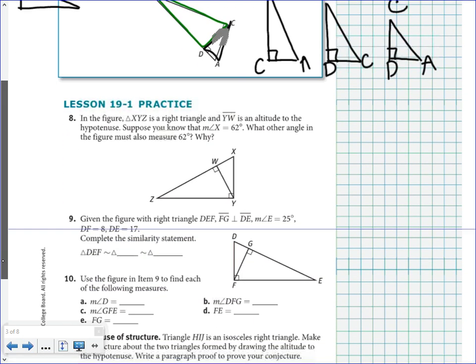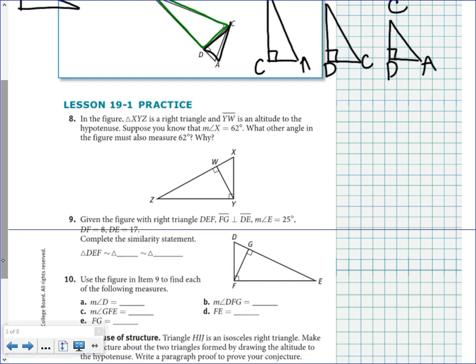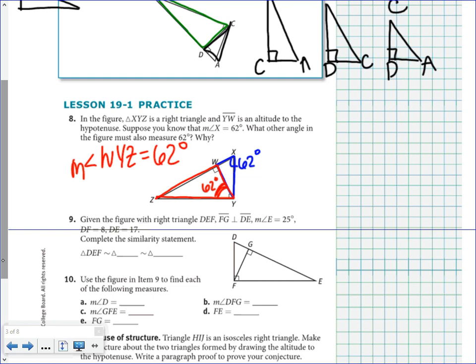In the practice figure, we have a right triangle with an altitude, meaning all three triangles are similar. If angle X is 62 degrees, what other angle measures 62 degrees? Since the triangles are similar by the right triangle altitude theorem, the corresponding angle in the other triangle is also 62 degrees. So the measure of angle WYZ is 62 degrees. We can say triangle XYZ is similar to triangle YWZ, and those two angles are corresponding.